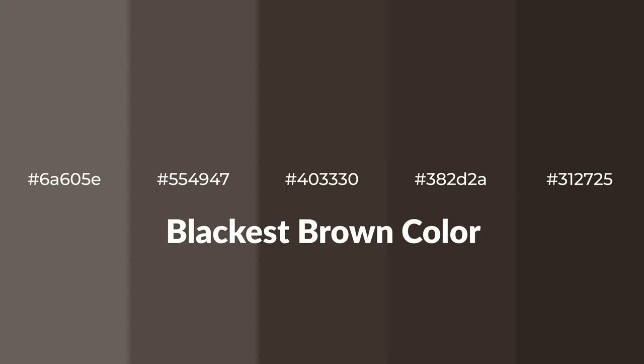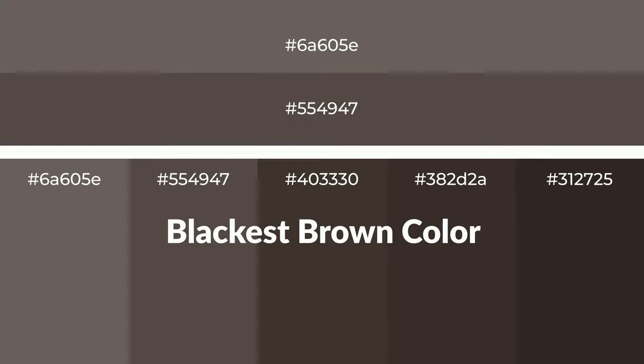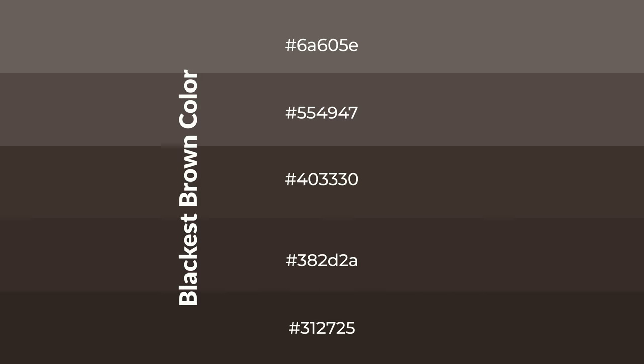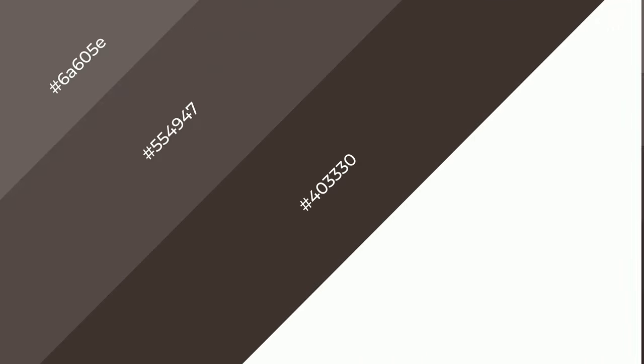Warm shades of blackest brown color with brown hue for your next project. To generate tints of a color, we add white to the color. Tints create light and exquisite emotions. To generate shades of a color, we add black to the color, and it is used in patterns, 3D effects, layers, and shades to create depth and drama.